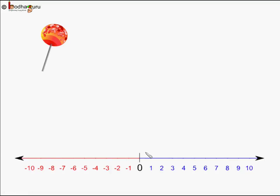You can see a number line here with zero at the center. Positive numbers increase on the right side: 1, 2, 3, 4 and so on, and negative numbers go from minus 1, minus 2, minus 3 and so on from the left side of zero. Let us understand this in detail.